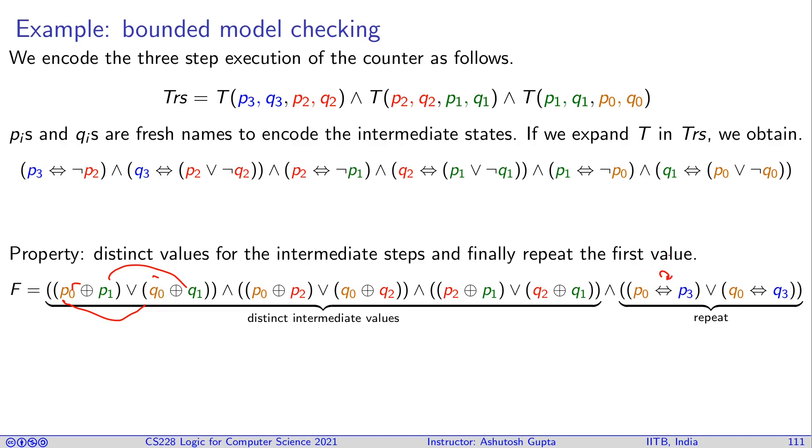That means it's a mod 3 counter. It first goes to three distinct states and then it follows the first state again. Now what we will do, we will call the SAT solver and say, can you give me a satisfying assignment? If there is a satisfying assignment of this satisfiability problem, then you don't have a mod 3 counter. Otherwise, if it is unsatisfiable, then you have a mod 3 counter.